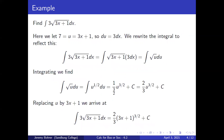Find the integral of three times the square root of 3x plus 1 dx. Here we let u equals 3x plus 1, so du equals 3 dx. We rewrite the integral: the integral of three times the square root of 3x plus 1 dx equals the integral of the square root of 3x plus 1 times 3 dx, which is the integral of the square root of u du.